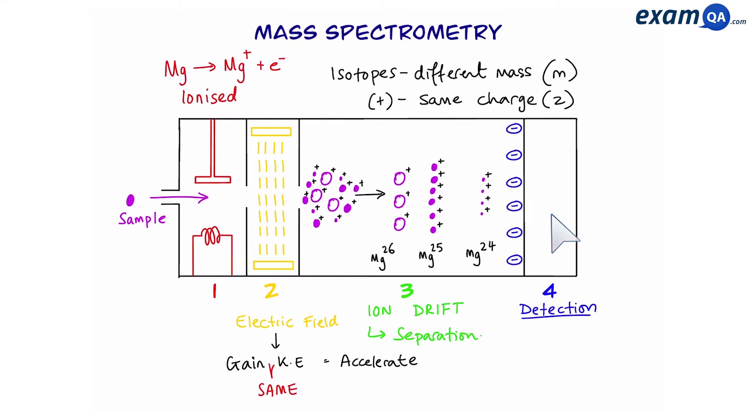The ions with the lowest mass to charge ratio will move quicker through the tube. At stage 4, we have a negative plate. The positive ions collide with this negative plate and gain electrons to turn back into atoms. Here, they get detected and a current is generated in the machine.